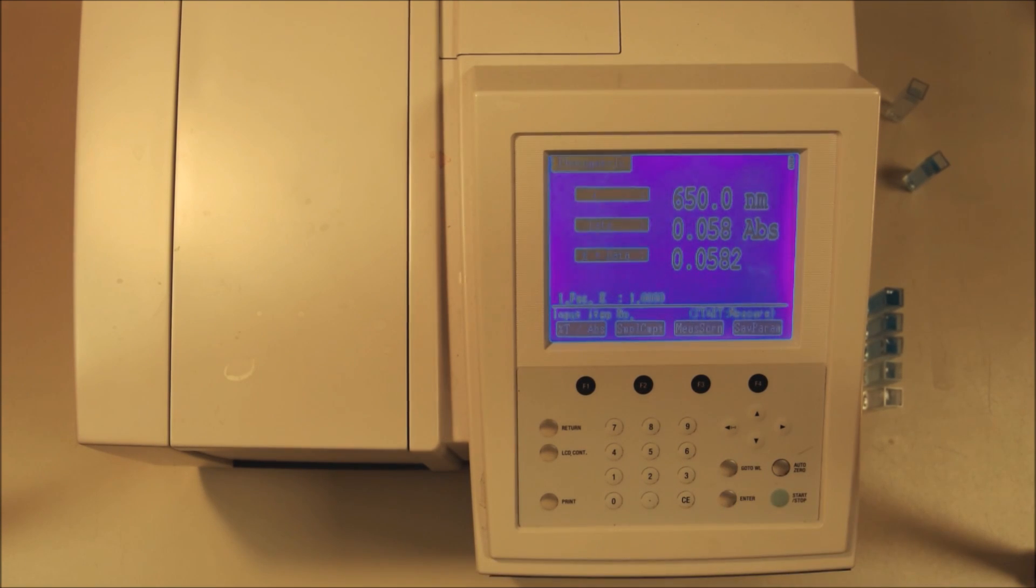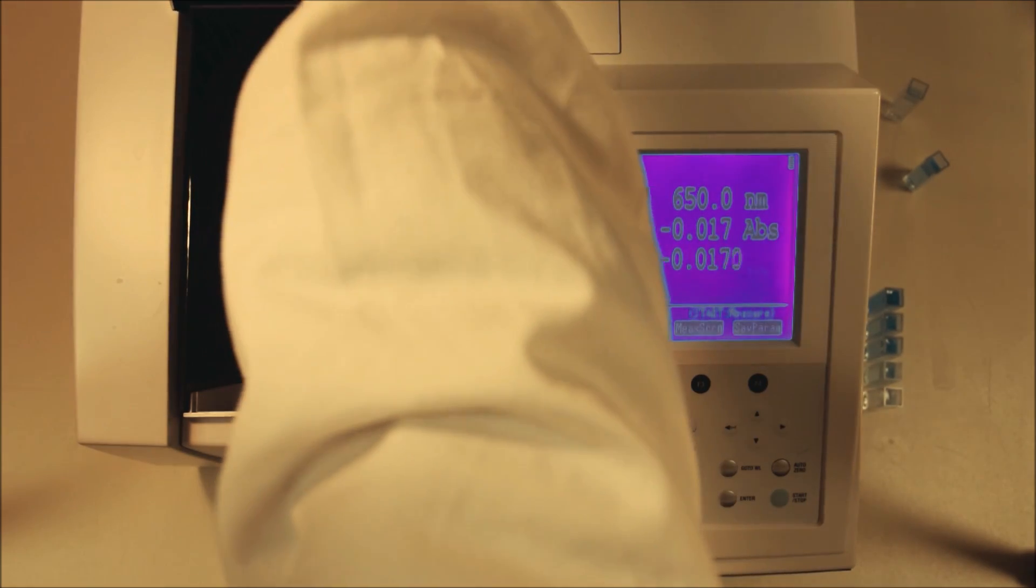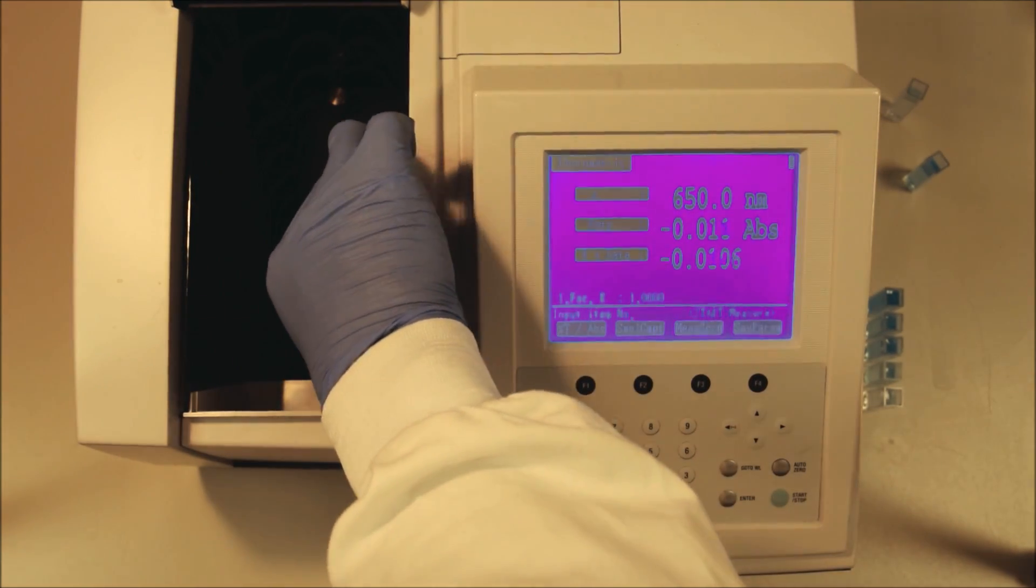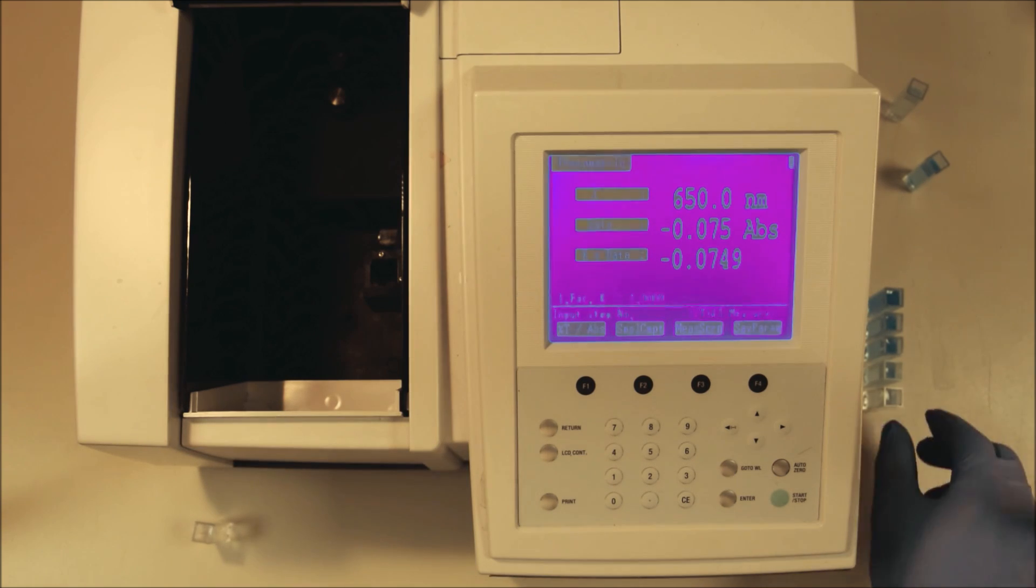So we push auto zero and we wait a few seconds for the machine to zero itself. Once it zeroes itself you'll notice that the absorbance reads at 0.000. Now we're ready to start making measurements. Notice how when we open the machine the absorbance changes. So it's important to have the machine closed so that there's no stray light making it onto the sensor altering our reading.